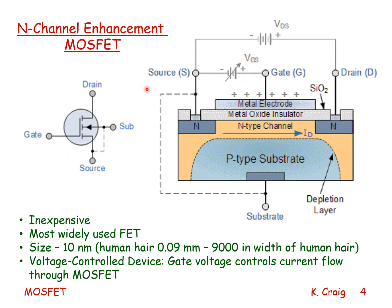Shown is a diagram of the n-channel enhancement MOSFET. It consists of three points of connection: the gate, the source, and the drain. The substrate is usually connected to the source internally. The gate consists of a metal electrode mounted on a metal oxide insulator. There are two types of semiconductor material: N-type, between which the source and the drain is an N-type channel through which current flows, and a P-type substrate.